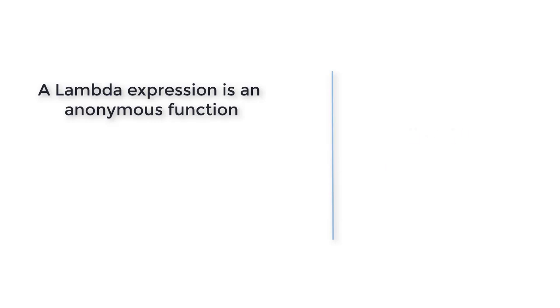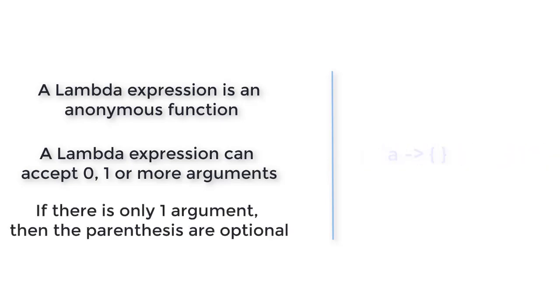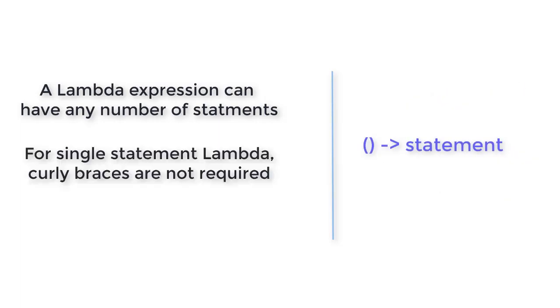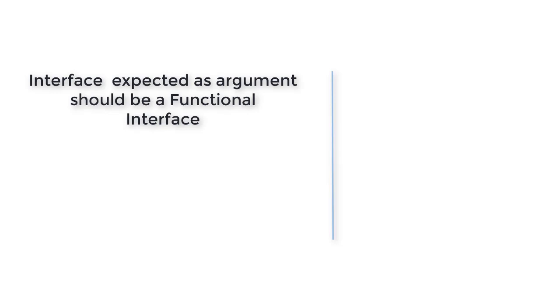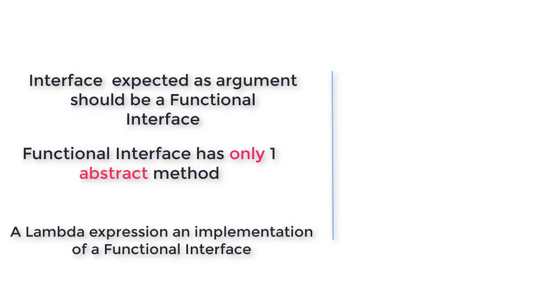Let's sum up all the things learned in this video. A Lambda expression is an anonymous function, meaning it does not have any name. It can accept 0, 1, or more arguments separated by parentheses, and it may or may not return a value. If there is only one argument, parentheses are optional. It can have more than one statement enclosed in curly braces; if there is a single statement, curly braces can be omitted. Lambda expressions can be supplied as arguments to methods accepting an interface type, which must be a functional interface containing only one abstract method. A Lambda expression can be considered as an implementation of a functional interface.